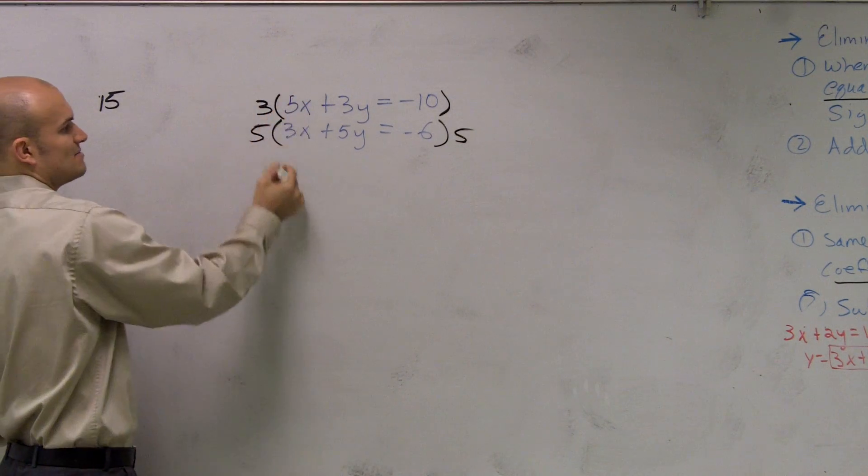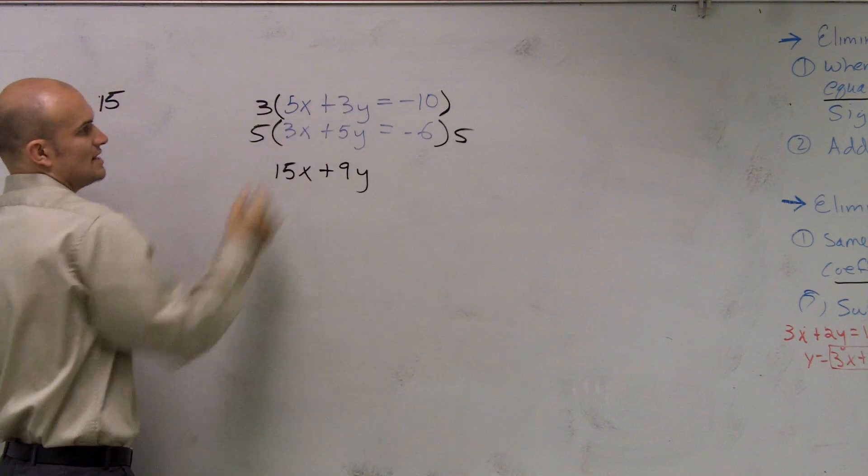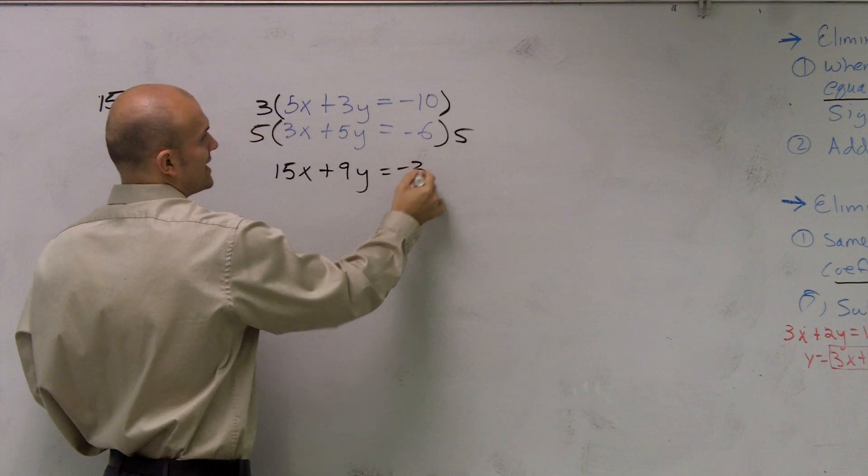So when I do that, 3 times 5 gives me 15x, 3 times 3y gives me 9y, 3 times negative 10 gives me negative 30.